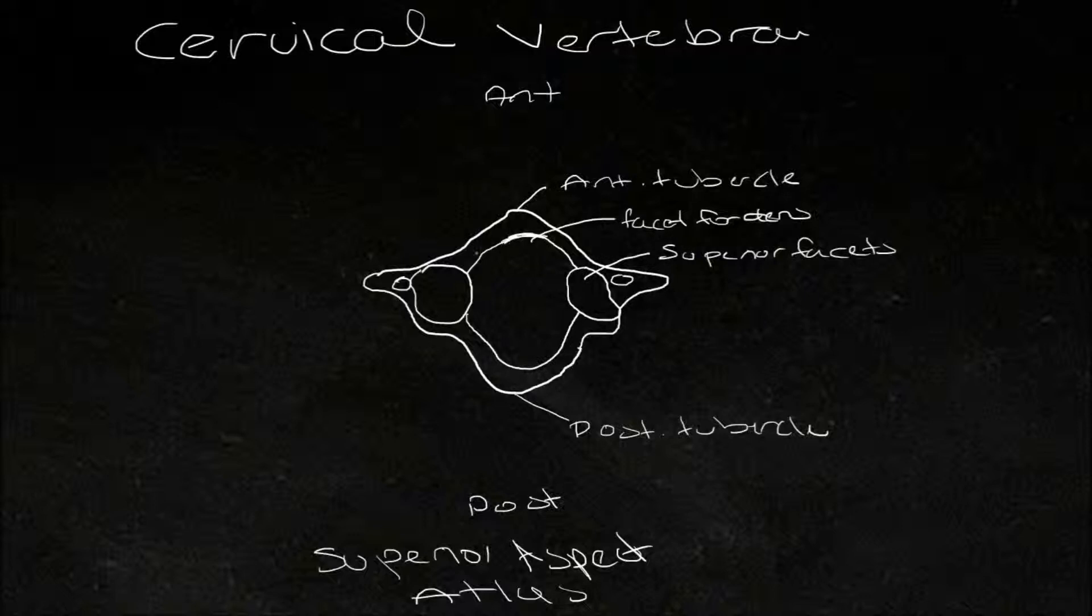We can see that there's no body for cervical vertebra one. I'll show you an illustration of a typical cervical vertebra, so not CV1 or CV2. We'll see that there is a small body in this position here, anteriorly.